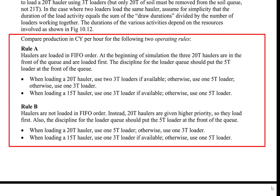Under operating rule B, haulers are not loaded in FIFO order. Instead, 20-ton haulers are given higher priority so they load first. The discipline for the loader queue should put the 5-ton loader at the front. Operating rule B requires that when loading a 20-ton hauler, use one 5-ton loader; otherwise use one 3-ton loader. When loading a 15-ton hauler, use one 3-ton loader if available; otherwise use one 5-ton loader.